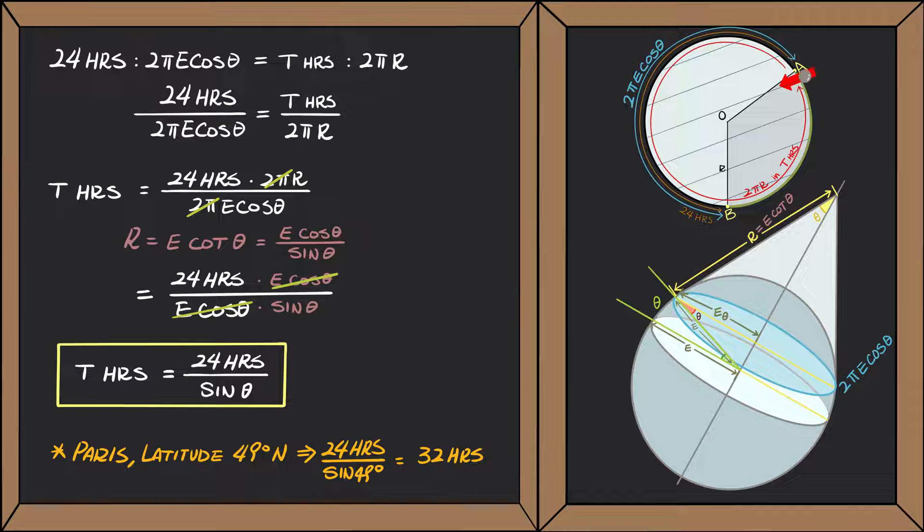We can see from this equation that as the latitude gets closer to 90 degrees, the value of sine theta gets closer to 1, and thus t gets closer to 24 hours.